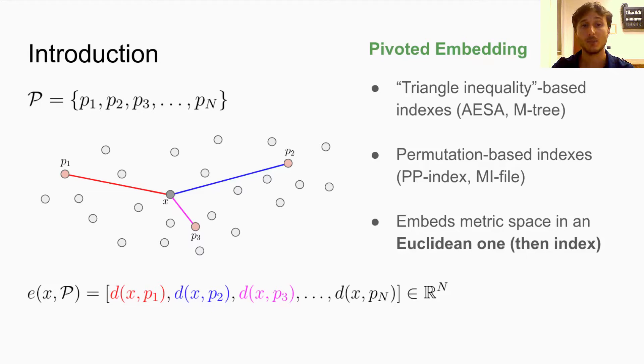For example, it can be stored to build indexes exploiting the triangle inequality, such as AESA and M-tree. Or you can compute its permutation for building permutation-based indexes for large-scale approximate search, just to mention a few.